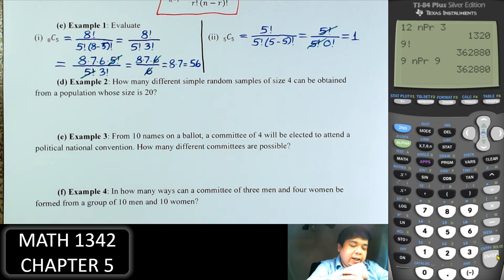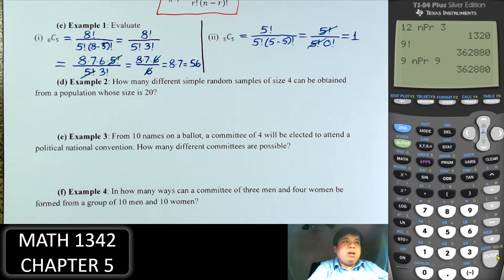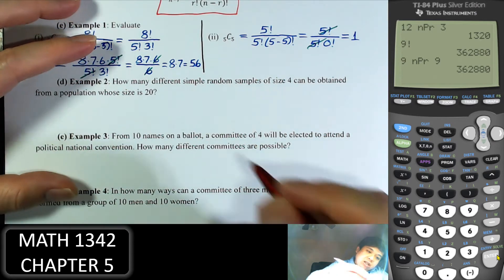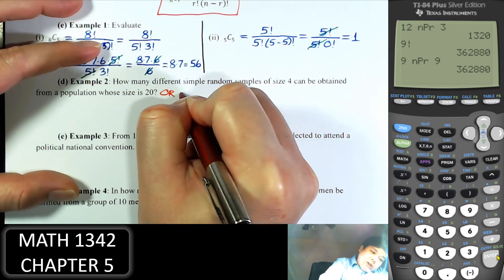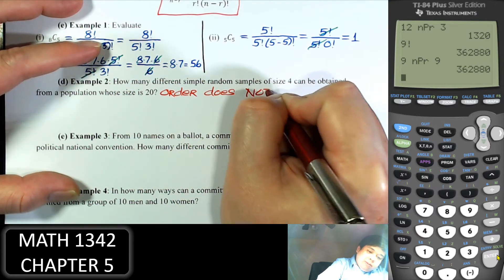How many different samples of size 4 can be obtained from a population of size 20? Let's say there are 20 people and you want to choose 4 to do a survey. When picking 4 people for a survey, it doesn't really matter who is picked first — as long as you have the same 4 people, that's fine. So the order does not matter, which means we use combination.